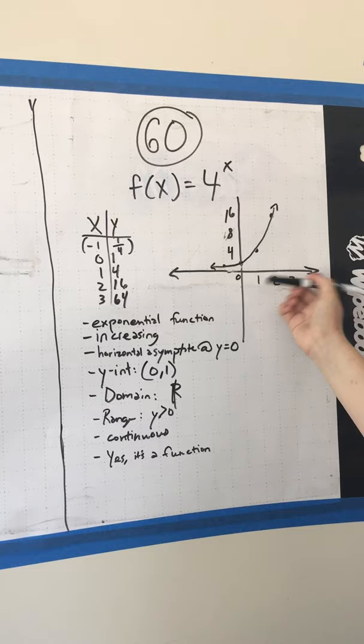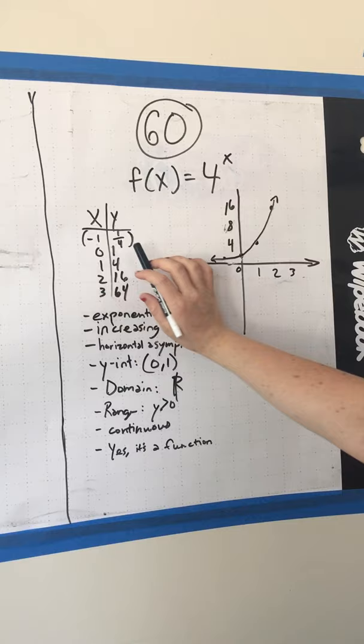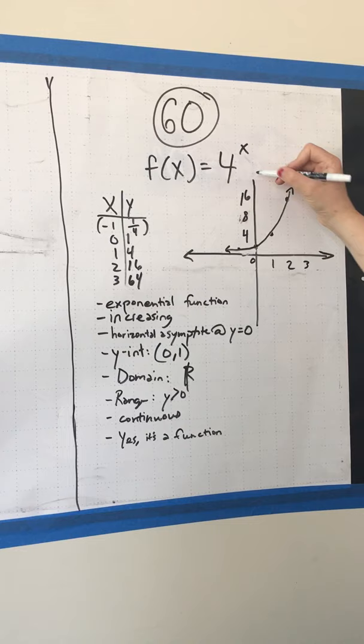So once we have our ordered pairs here, we can graph it. And I counted by 4s on the y-axis, just because it was easier to make the graph.